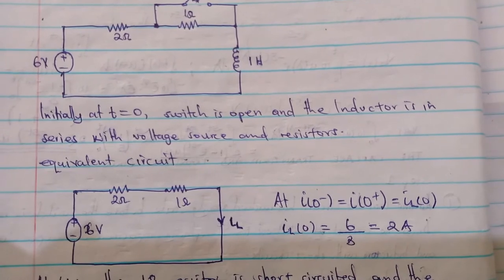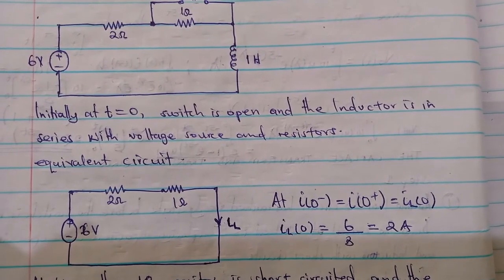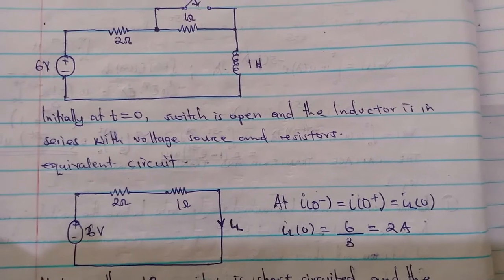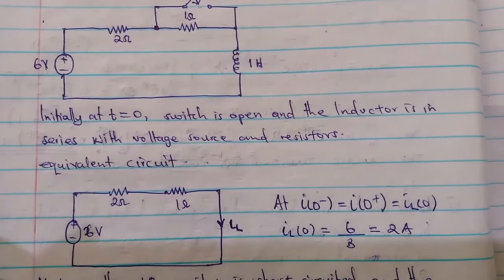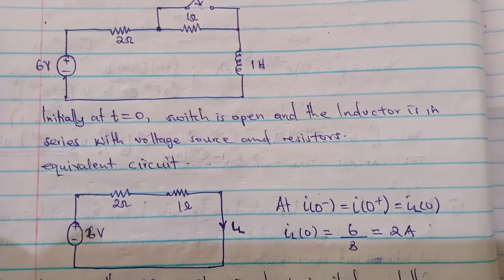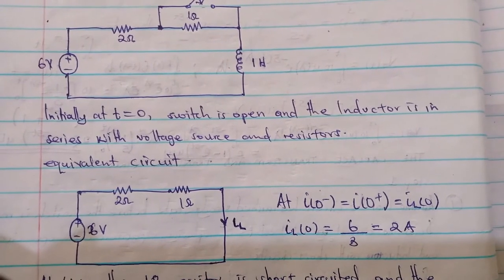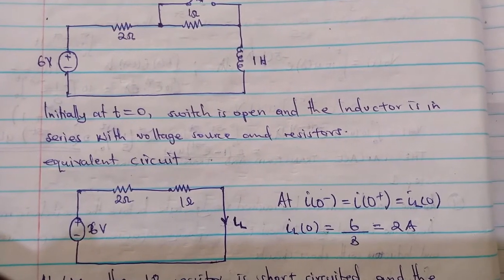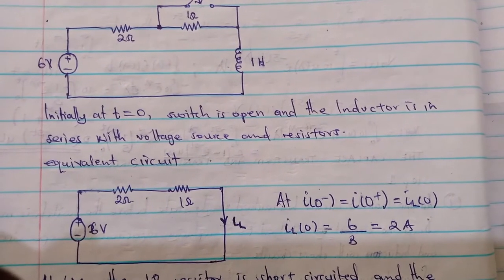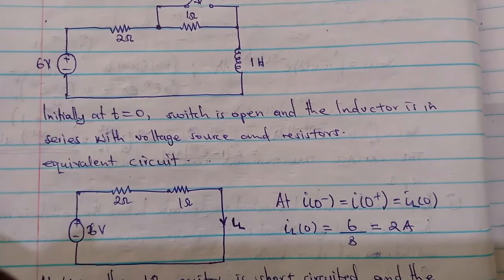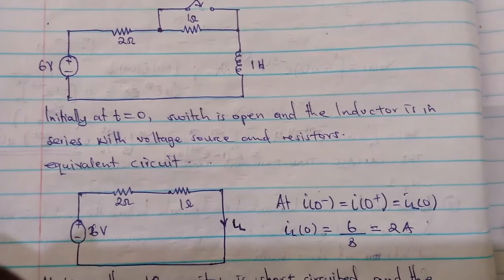We replace our inductor with a short circuit so that a very large current goes through it. Since there is no capacitor, we neglect that position. When the voltage source is supplying the inductor and current is continuously flowing, we have what we call continuity conditions — at continuity conditions, just as the switch is still open and just as it has closed, the current through the inductor remains the initial current, giving us the initial conditions.